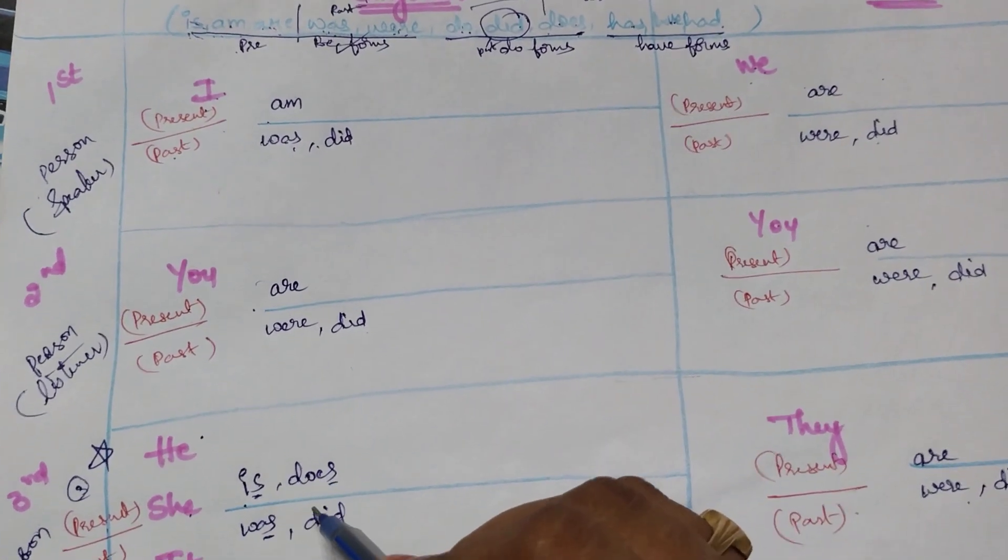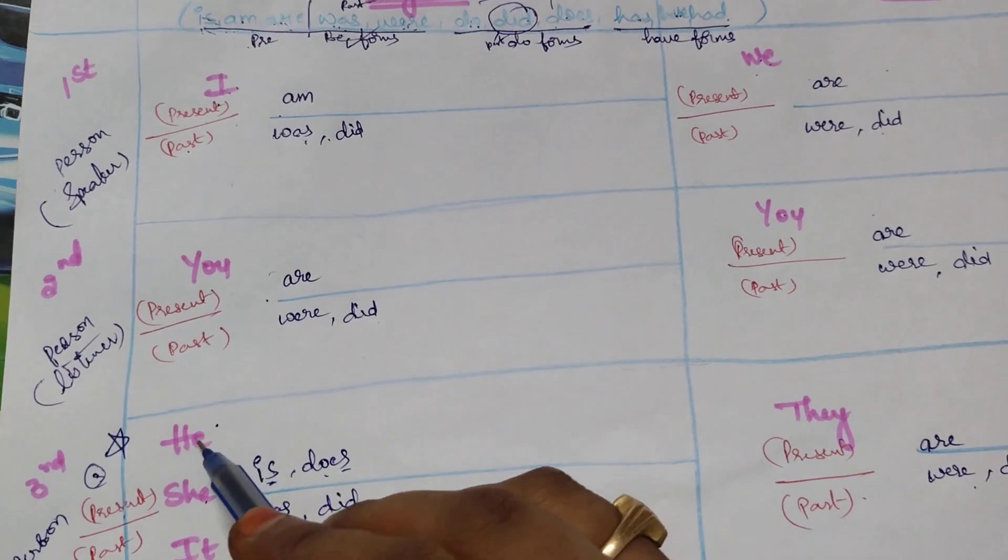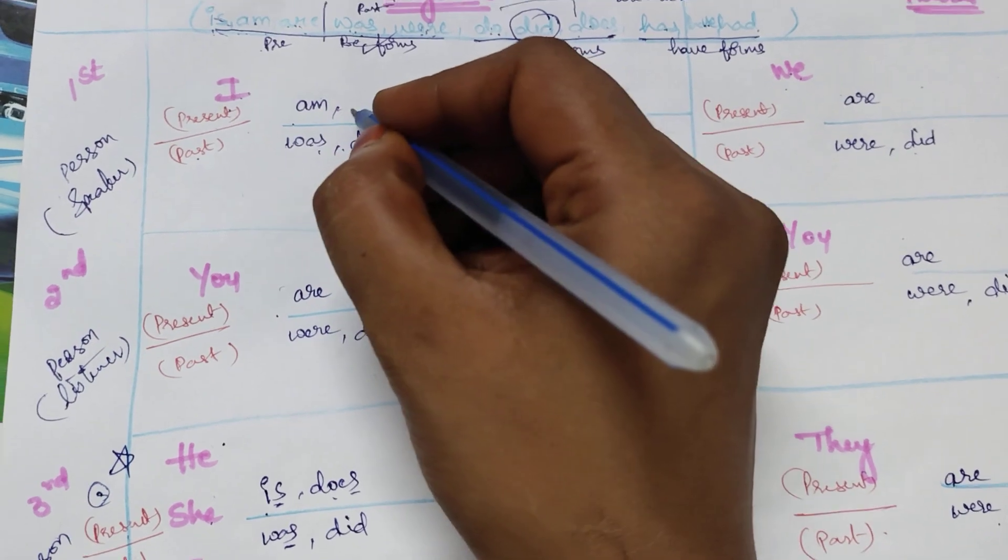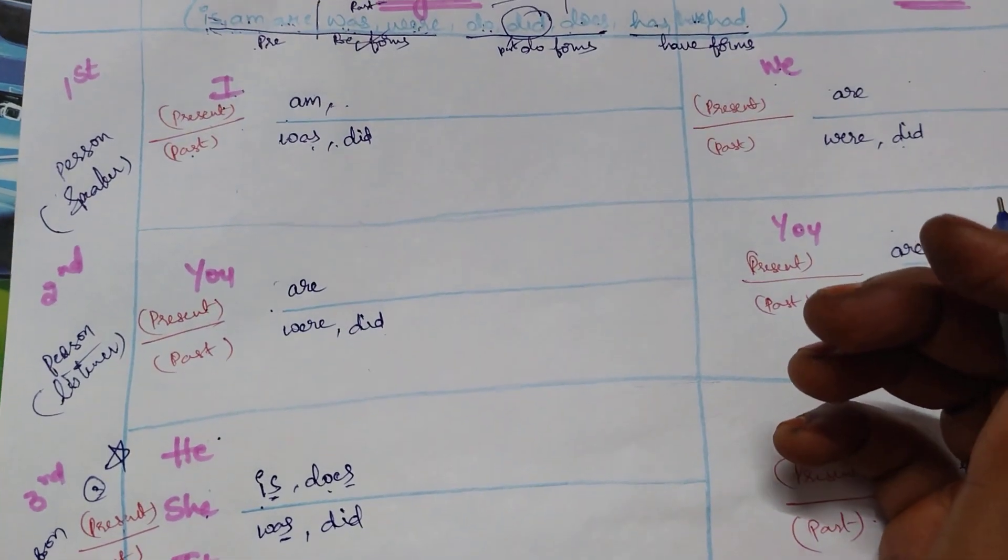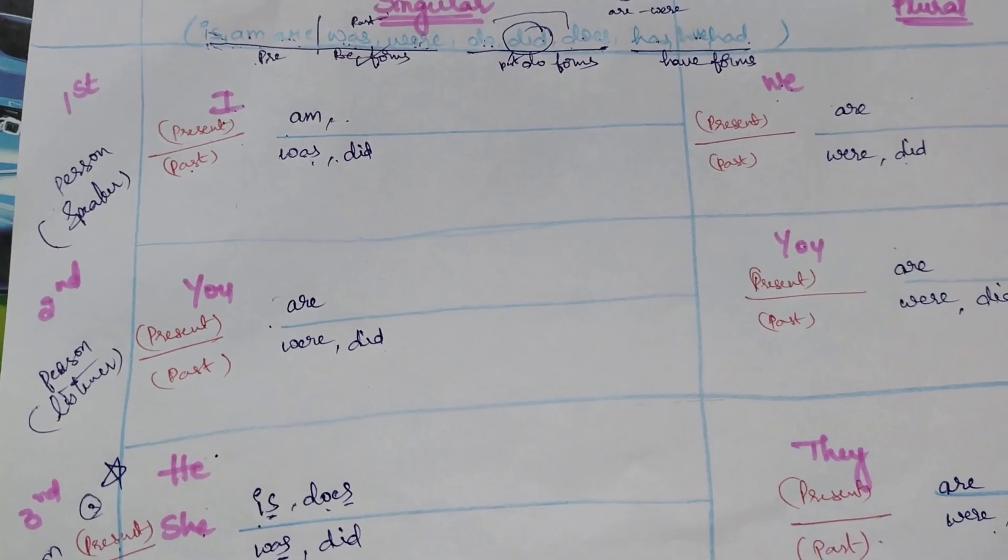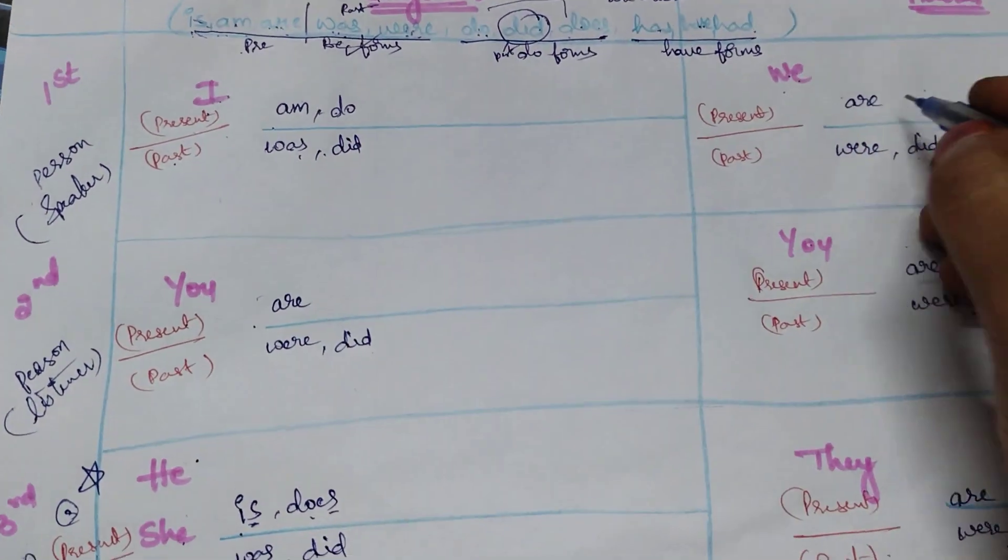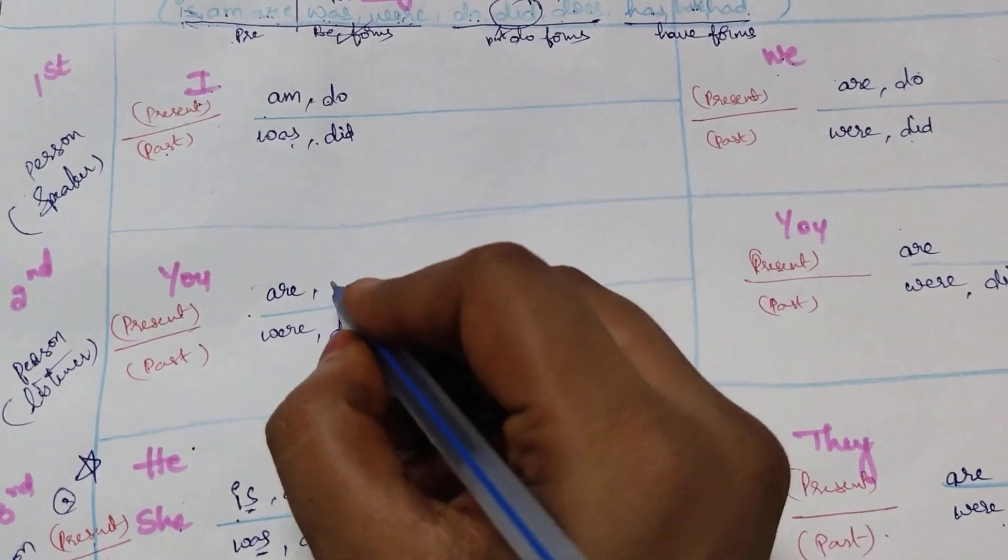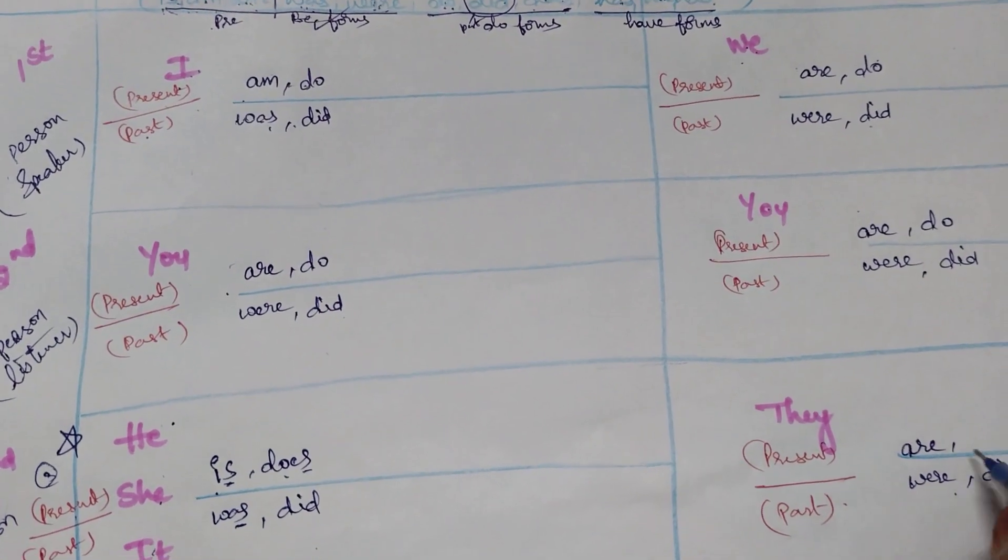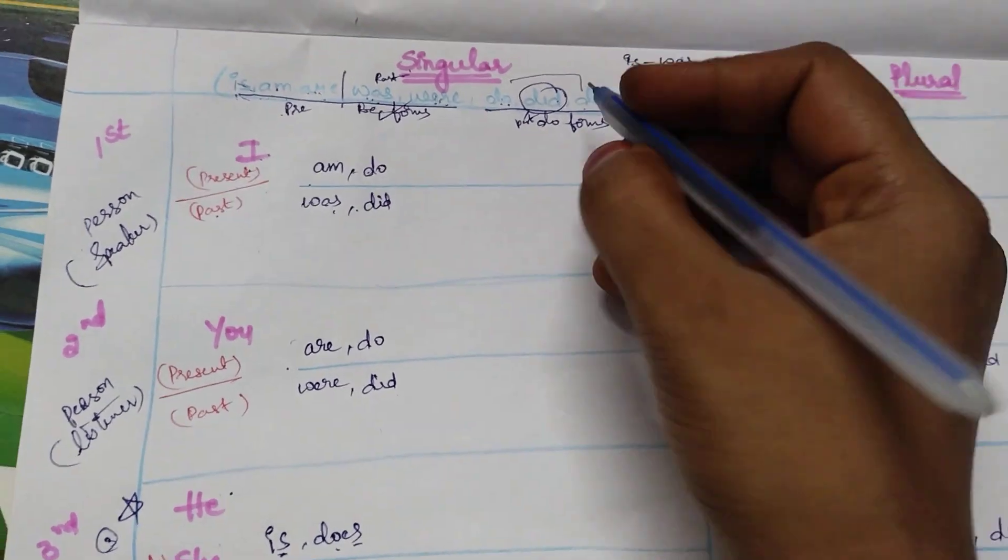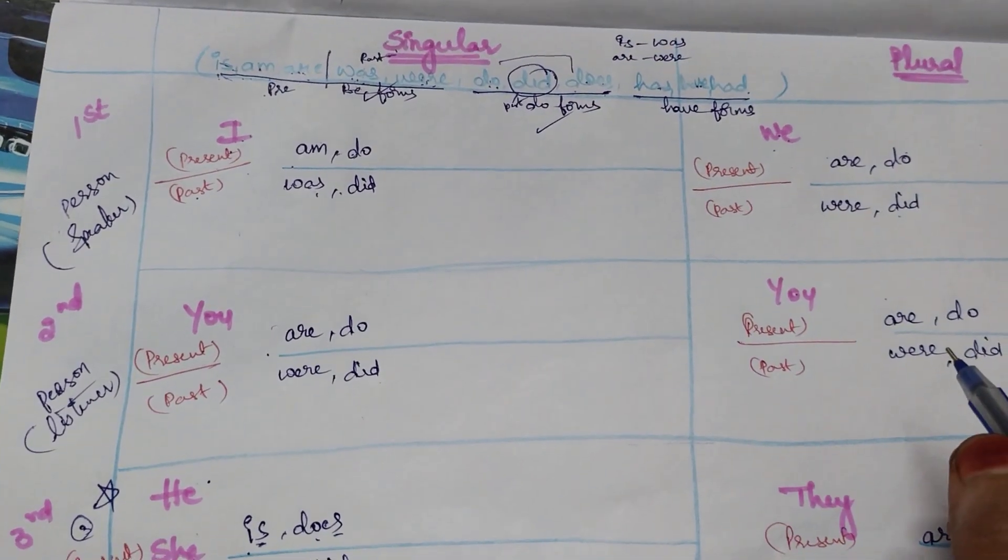So we have left with do. So the remaining will be do. I do, we do, you do, they do. But he, she, it does. Now do forms also completed.